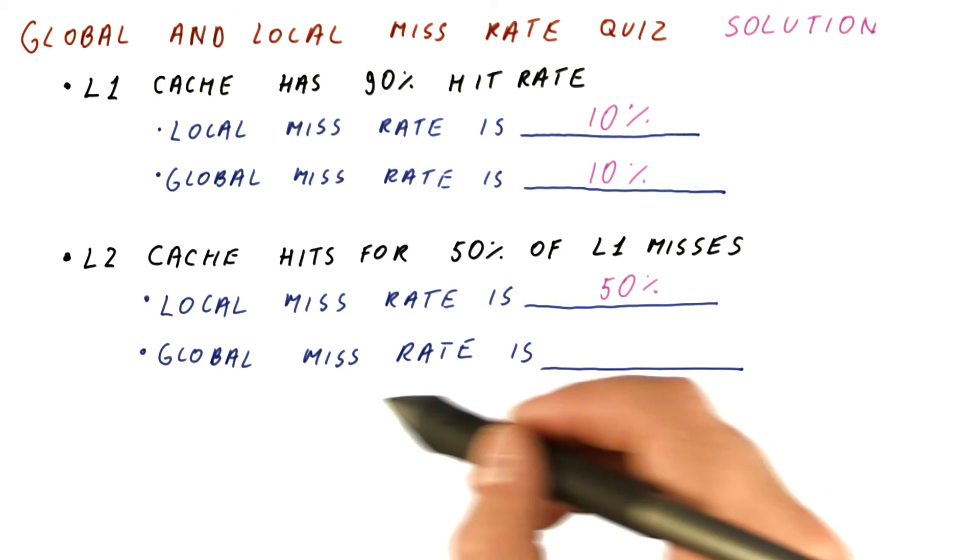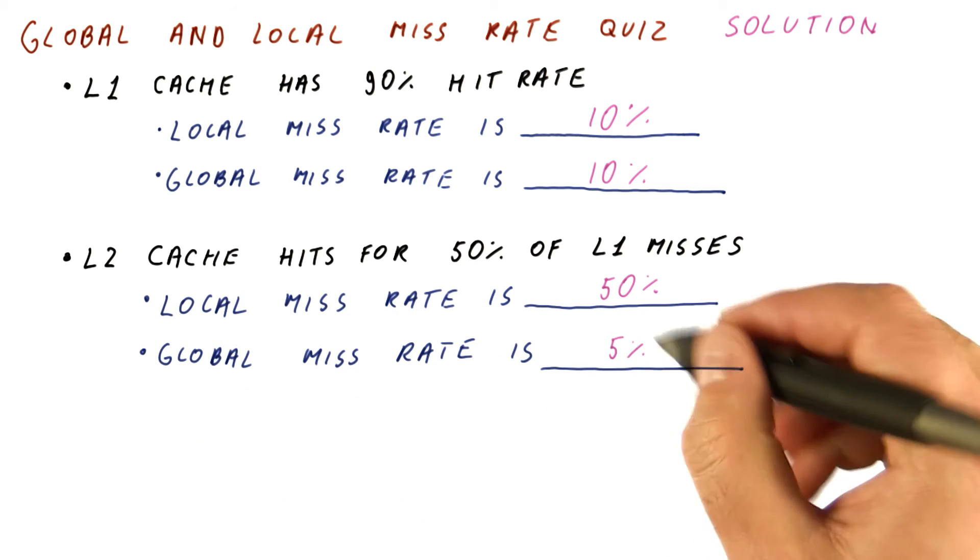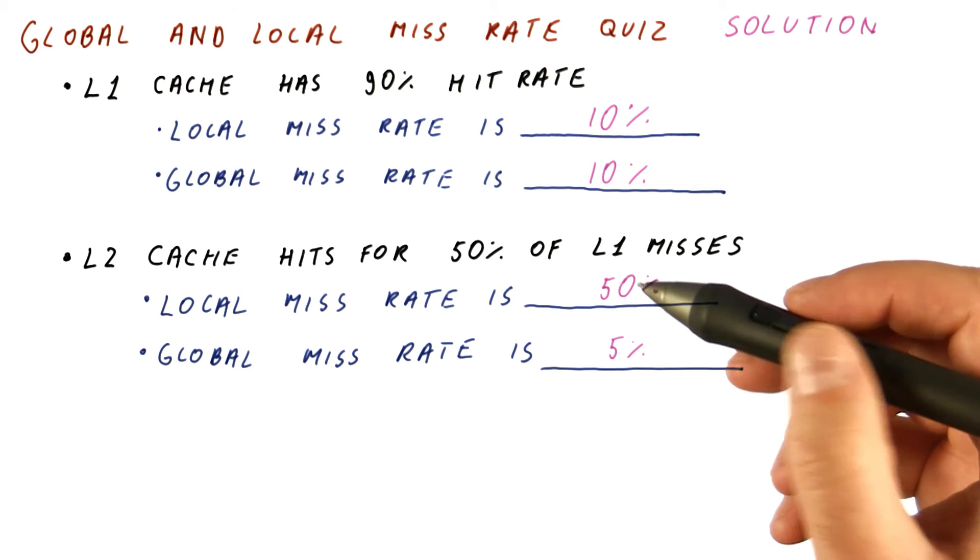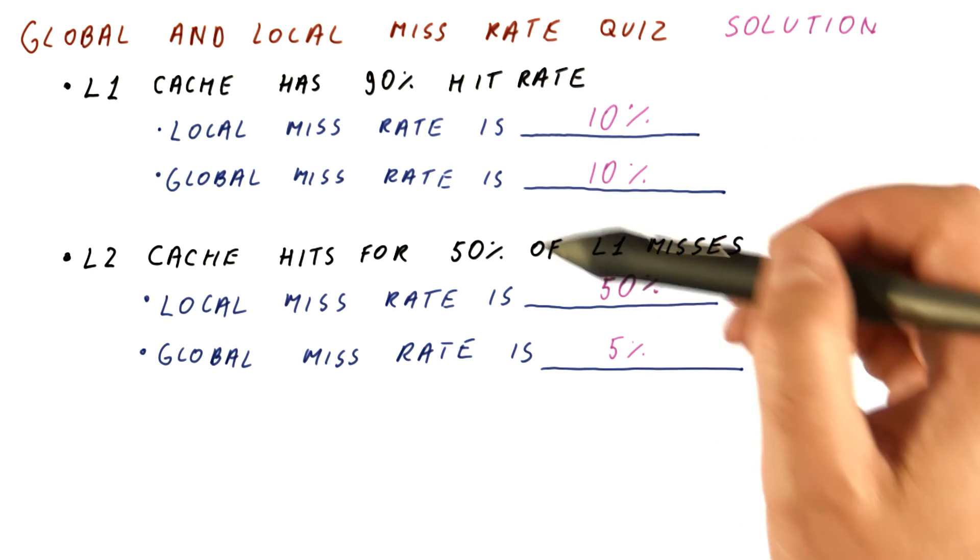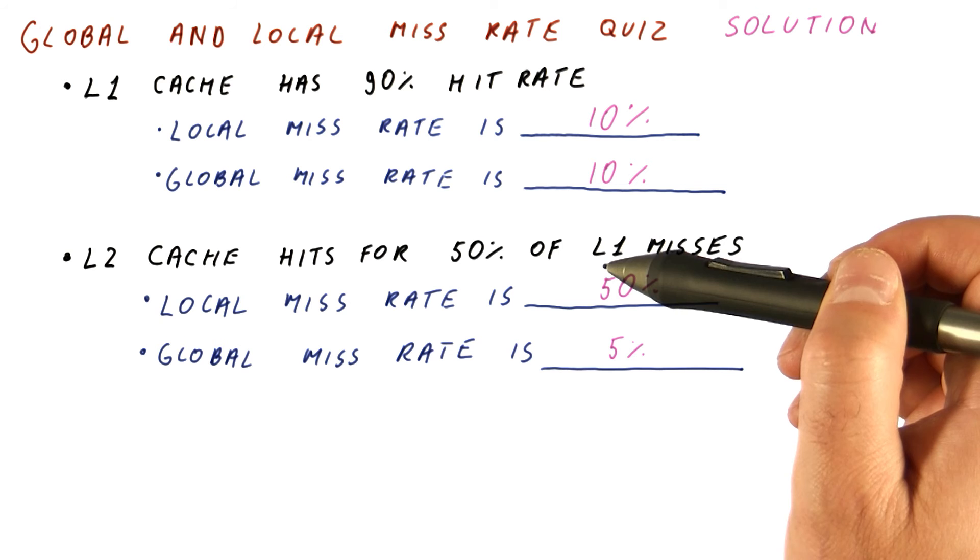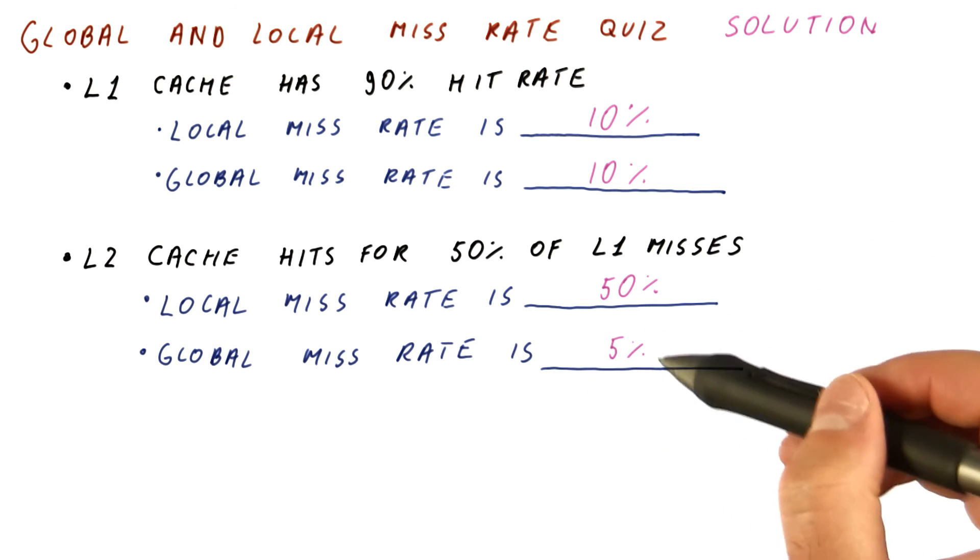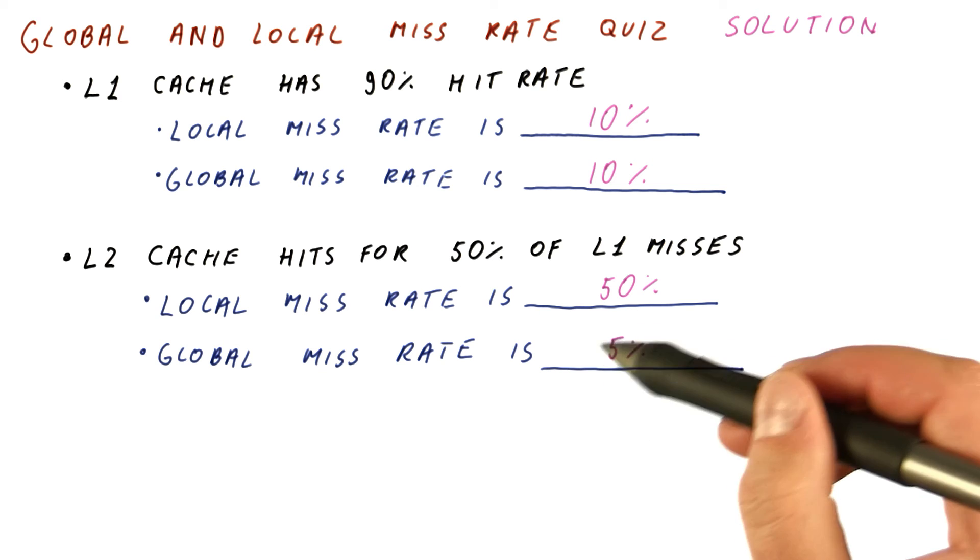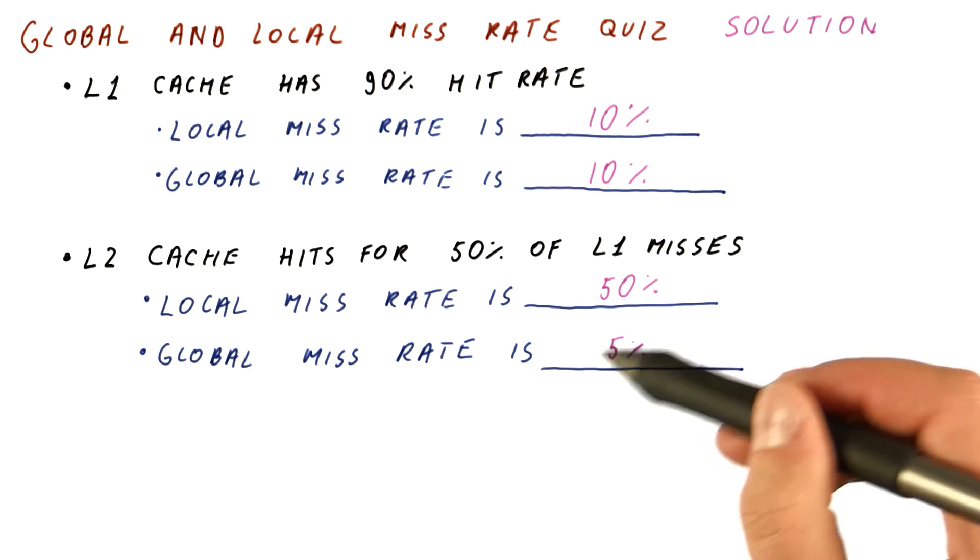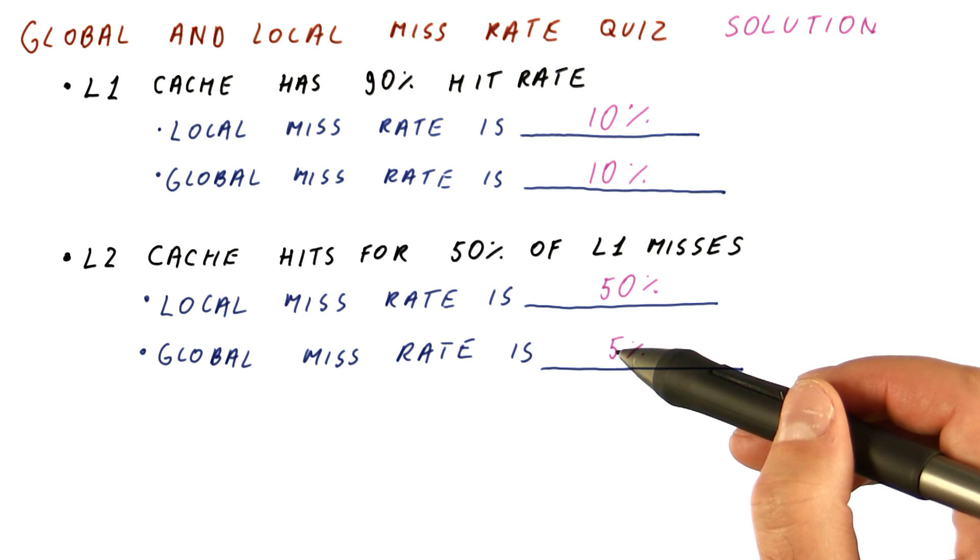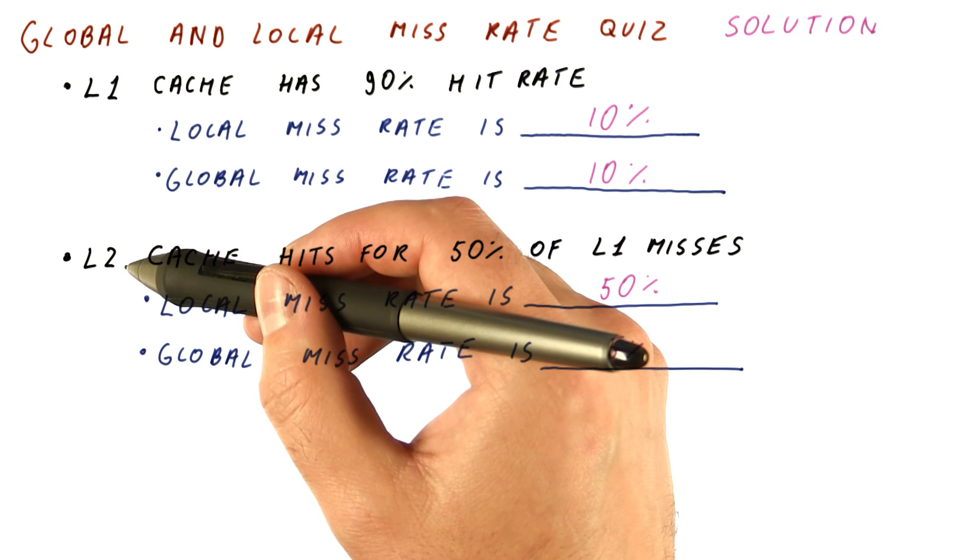But its global miss rate is only 5%. Because only 10% of the accesses get to this cache, and half of that misses. So when we express the misses in terms of all the accesses that the processor made, only 5% of all processor accesses end up missing in the L2 cache.